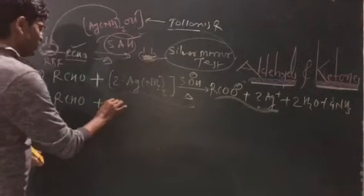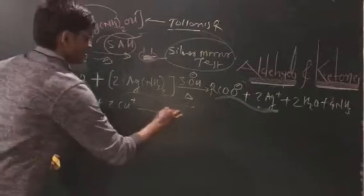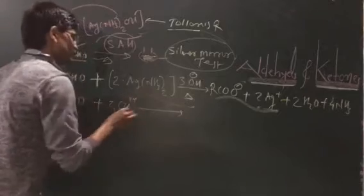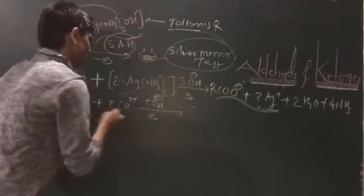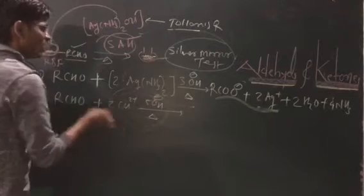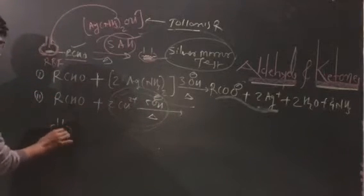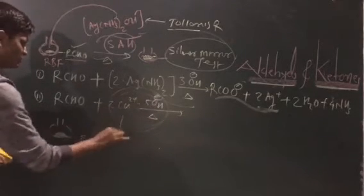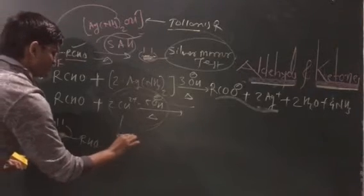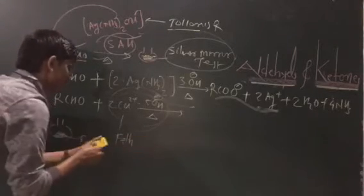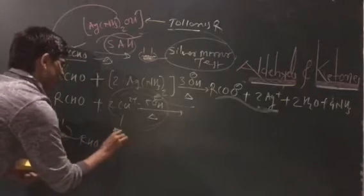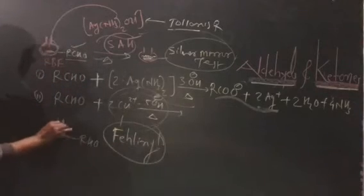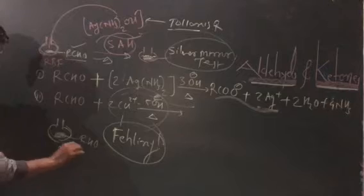Next, the reaction involves 2Cu²⁺ plus five hydroxide ions — this is the addition of copper hydroxide ions. Again, the round bottom flask (RBF) contains aldehyde, and we add this mixture, which is called Fehling's solution. The Fehling's solution is added into the round bottom flask.